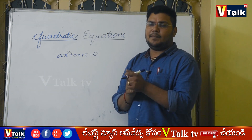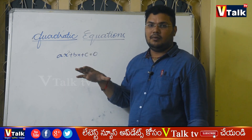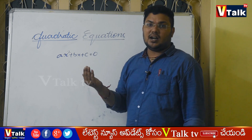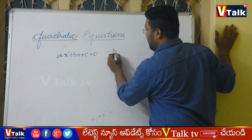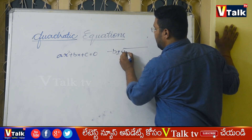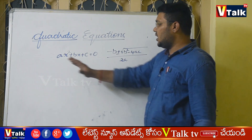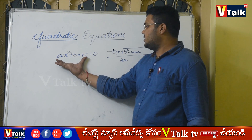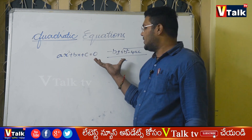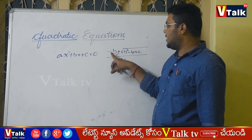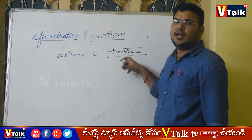The completing square method is done using the general form. The quadratic formula is minus b plus or minus root of b squared minus 4ac by 2a. Starting from ax squared plus bx plus c equal to 0, using the completing squaring method, the resultant is minus b plus or minus root of b squared minus 4ac by 2a.